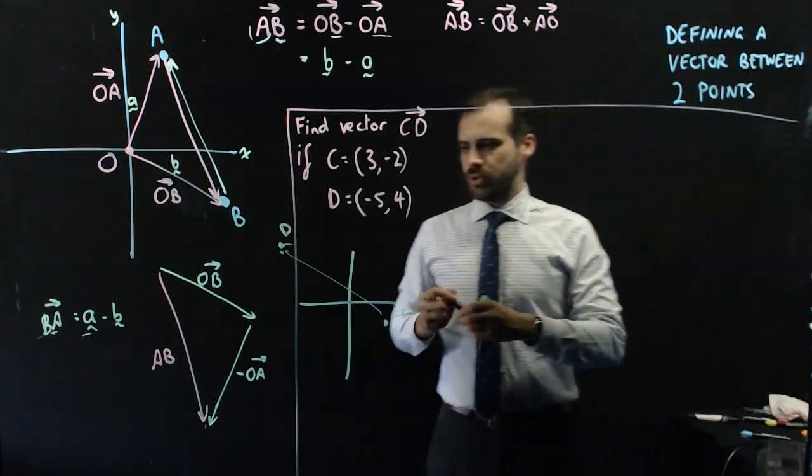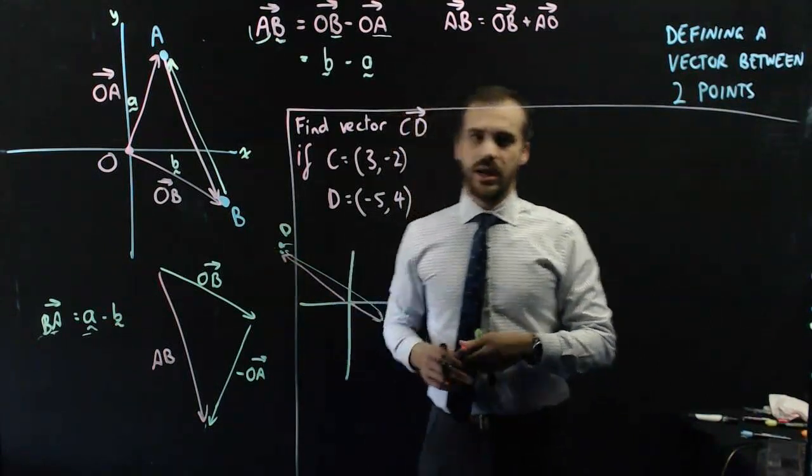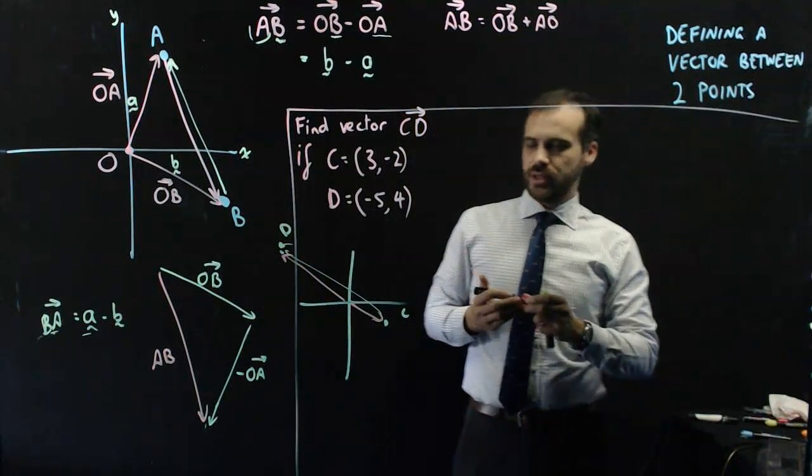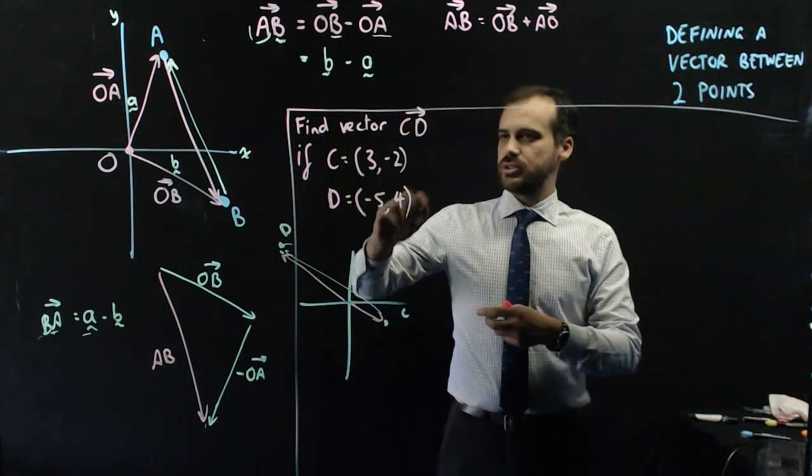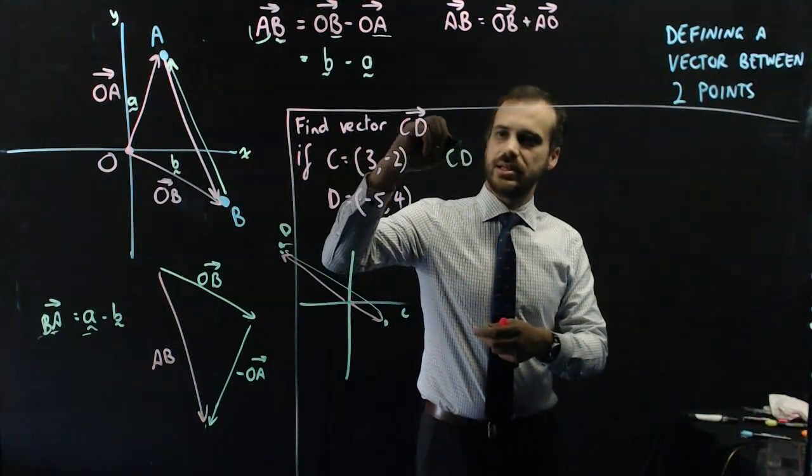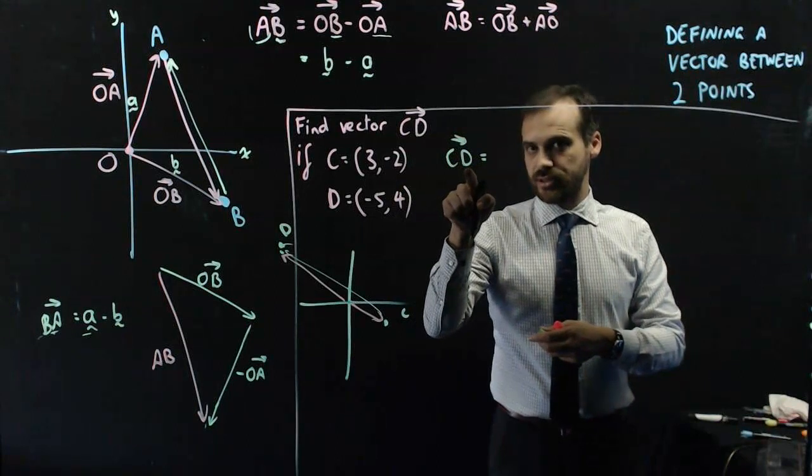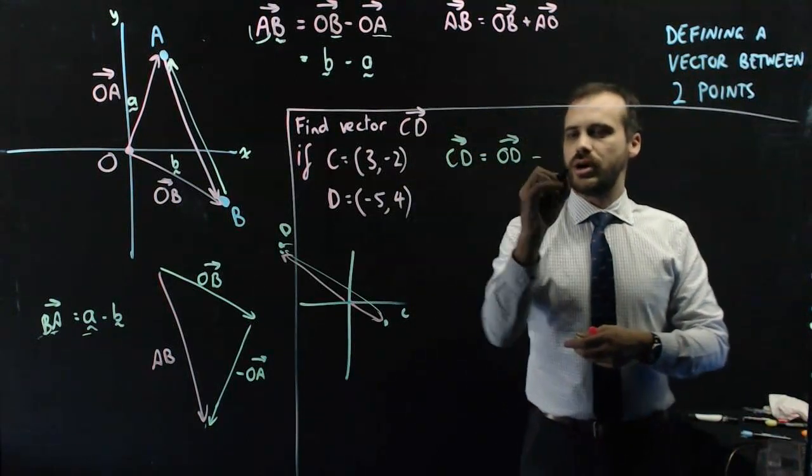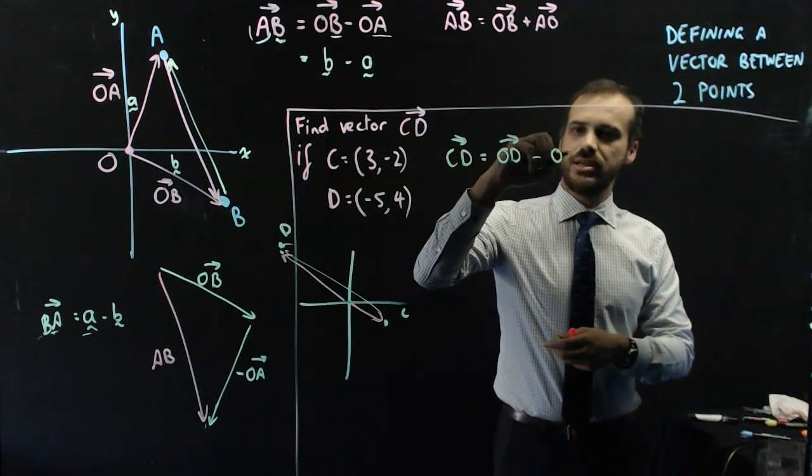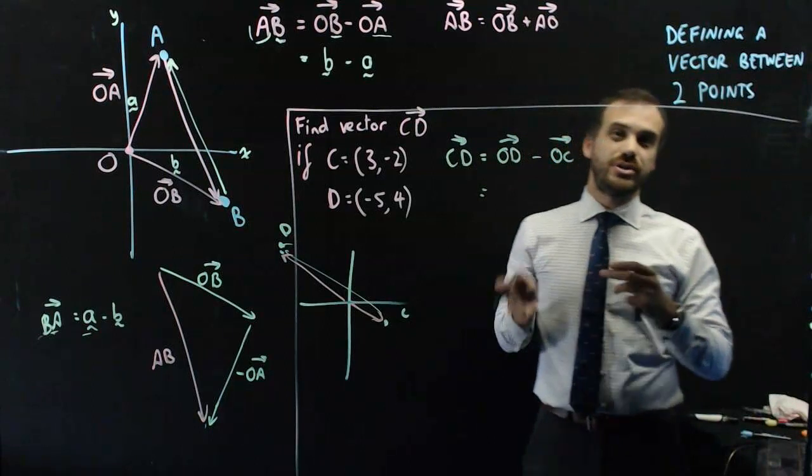So that's C and that's D and we're finding vector CD. To do that, we create two position vectors, OC and OD and we subtract one from the other. Okay, let's give that a crack. So we can now say that CD is equal to the second letter first, vector OD minus vector OC.